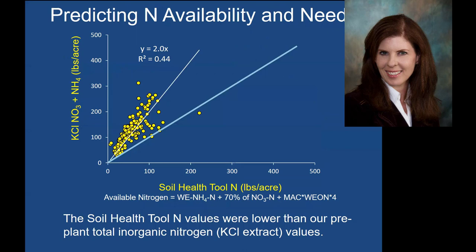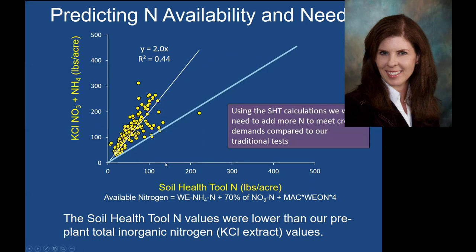Looking at predicting nitrogen availability, the next several graphs have the soil health tool numbers on the x-axis and what we measured from pre-plant sampling on the y-axis. The soil health tool was somewhat related to our potassium chloride extractable nitrate and ammonium that we would typically use to predict how much nitrogen to apply that year. However, our inorganic nitrogen numbers were twice what we saw with the soil health tool. So even though the tool was trying to predict extra nitrogen that would be released over the season, it didn't even predict the amount we would typically see with our regular pre-plant inorganic nitrogen testing.